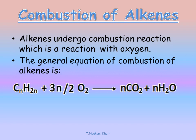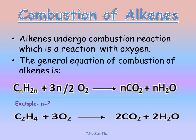The general equation of the combustion of an alkene is: CnH2n plus 3n/2 O2 gives nCO2 plus nH2O, and heat energy is released. For example, if n equals 2, the alkene is C2H4, and it will react with 3O2 to give 2CO2 plus 2H2O.